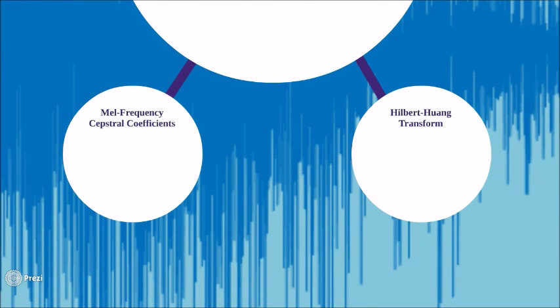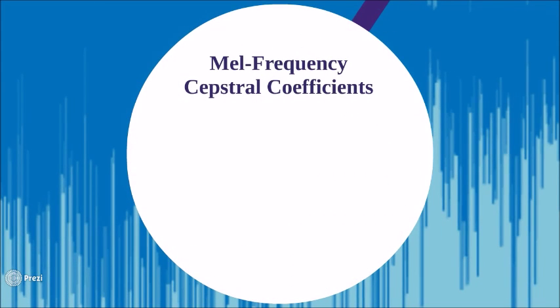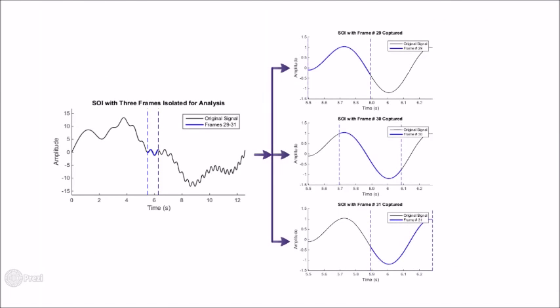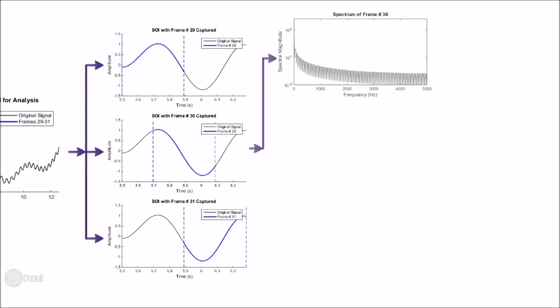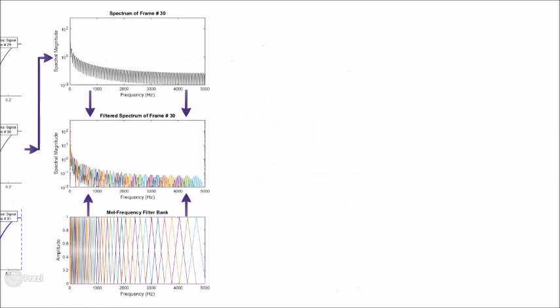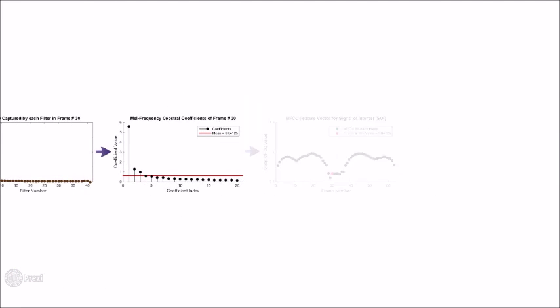We chose to implement two different feature extraction techniques. The first technique implemented was MEL frequency-cepstral coefficients. Given a signal, it is divided into a number of overlapping frames. Then, a series of mathematical transforms are used to obtain the spectrum. Given a pre-calculated filter bank, the filtered spectrum of the signal is computed, and the energy captured by each filter is obtained. After a few more mathematical transforms, the mean of the values is taken and is used to represent a feature in the final feature vector.